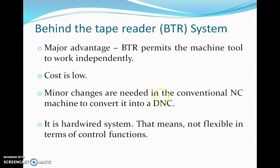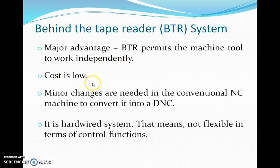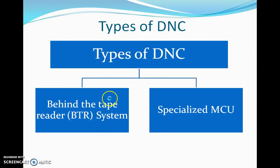A major advantage of BRT is that it permits the machine tool to work independently. If a machine needs to be removed from the DNC, a tape reader can be reattached and it can again be used as a standard NC system. The cost is also less, and by making certain minor changes to a conventional NC system, the machine can be converted into DNC — essentially just replacing the tape reader with telecommunication lines.